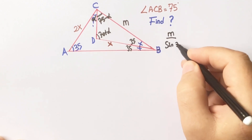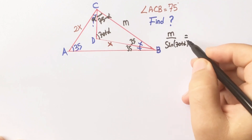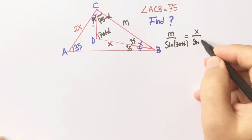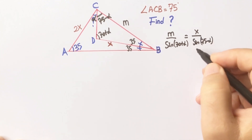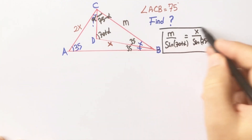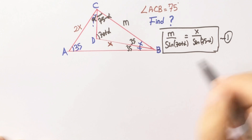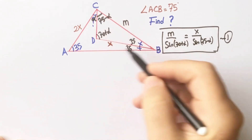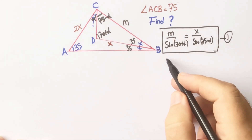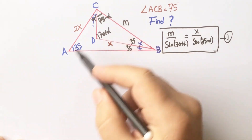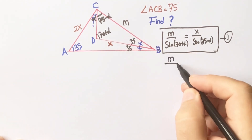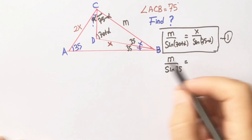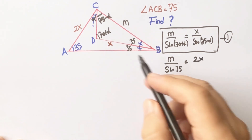If we apply the sine theorem in triangle CDB: M over sine(70 + alpha) equals X over sine(75 - alpha). This is the first equation. We can also apply the sine theorem for the biggest triangle: M over sine(35) equals X over sine(70). This is the second equation.